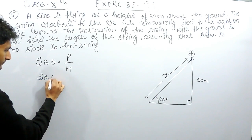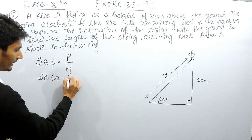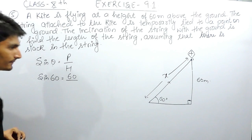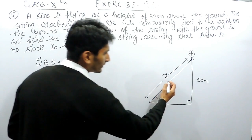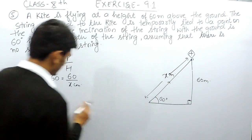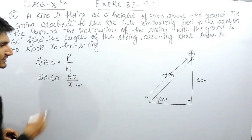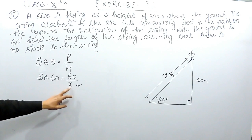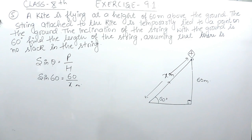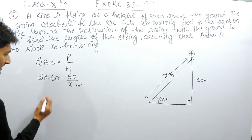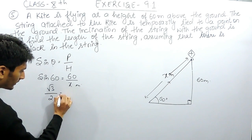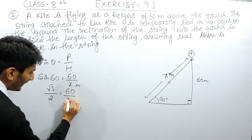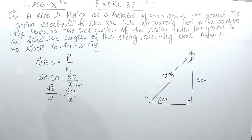Here the theta is given as 60 degrees, perpendicular is given as 60, and the hypotenuse we can assume as x meters. The value of sin 60 is root 3 by 2, which equals 60 upon x.